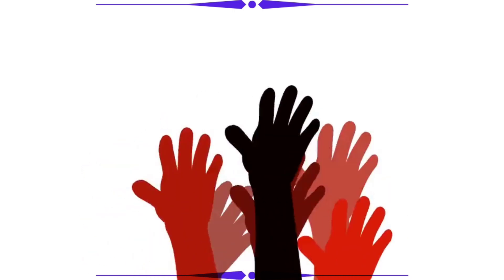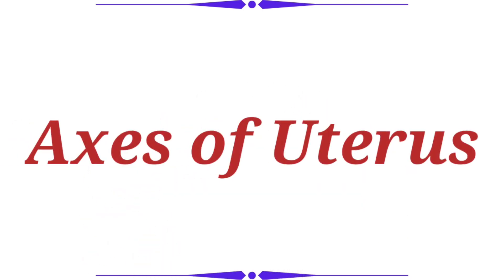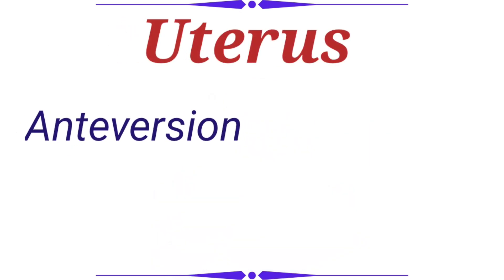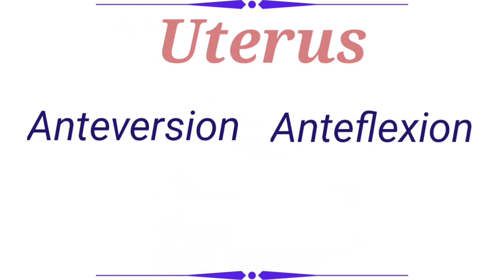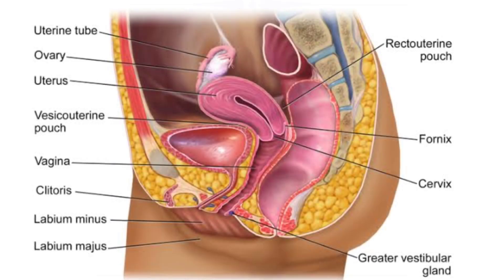Hi guys, today I will explain the axes of the uterus and a silly trick to remember this forever. Normally the uterus lies in a position of anteversion and anteflexion. Instead of directly explaining the definitions, I will show you a figure on the screen right now — the uterus in its normal position — which I think everyone is very familiar with.